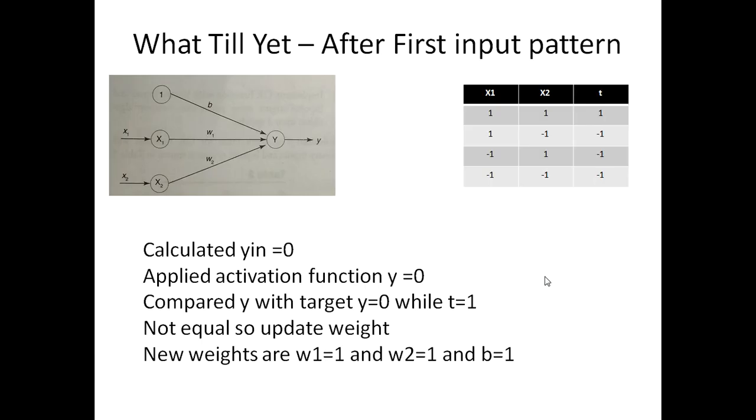Till now we have calculated the value of net input, applied an activation function and achieved a result of zero. We compared the result of y with the target value and they are not the same. If they are not same, we have to update the weights for x1, x2 and bias. But if y equals target, then we don't need to change the values of w1, w2 and b.